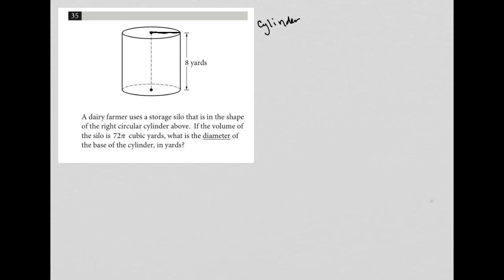The question says a dairy farmer uses a storage silo in the shape of a right circular cylinder. If the volume of the silo is 72π cubic yards, I'm going to write that down.